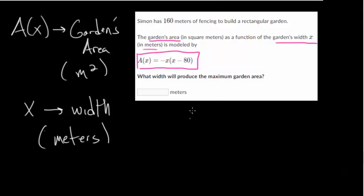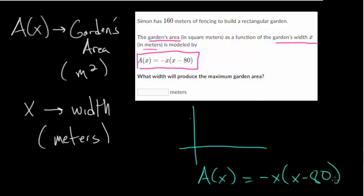In general, if we were to sketch this equation out, let me just rewrite the equation. The area as a function of the width of the garden is -x times (x - 80).